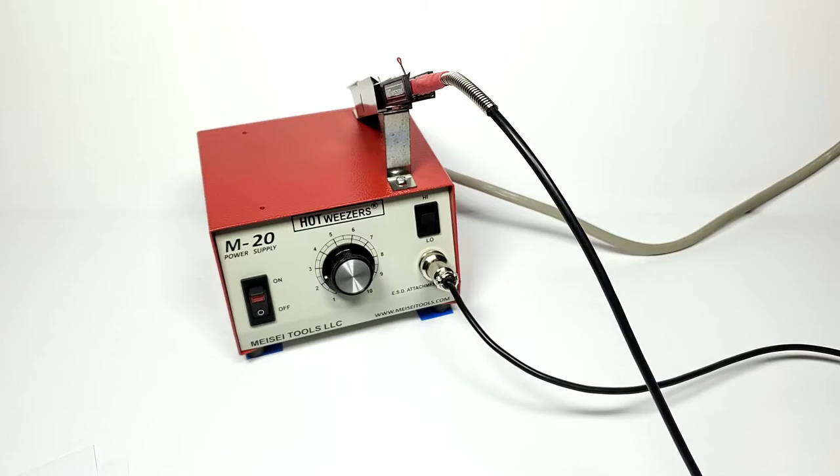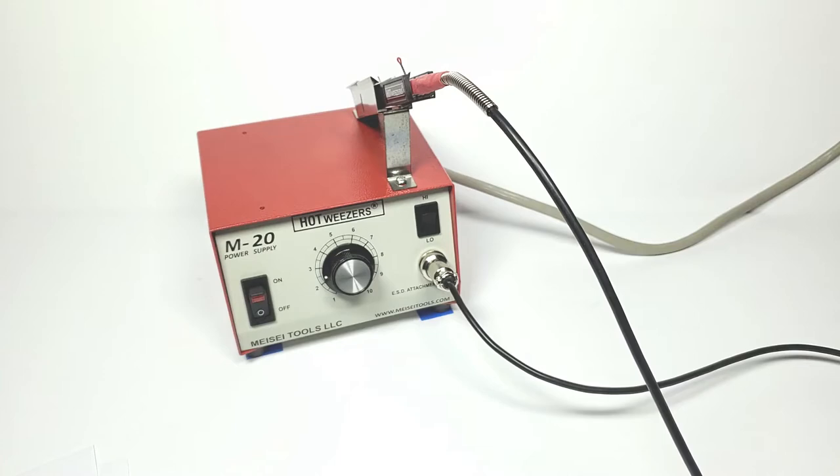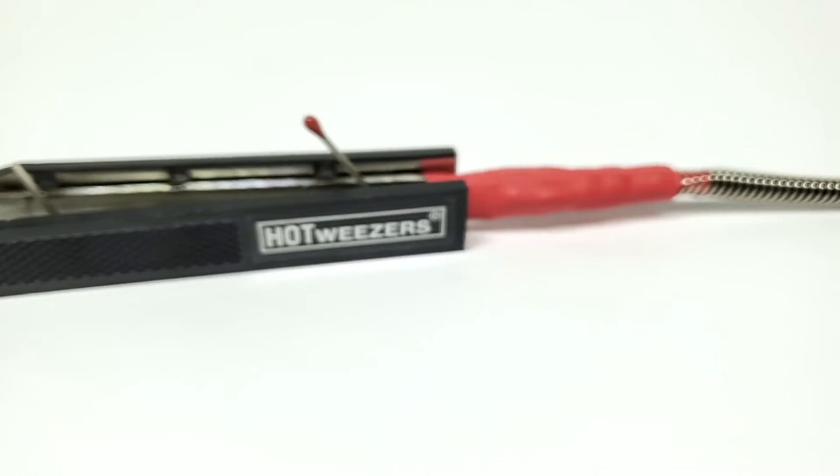This awesome device made by a company called Maysay is a hot wire stripper. What is a hot wire stripper you ask? Well, this stripper uses heat to bisect wire insulation so you can get clean, quick cuts every time with repeatable results.